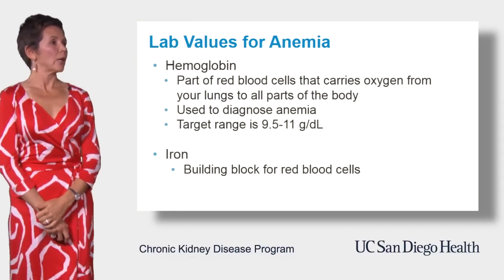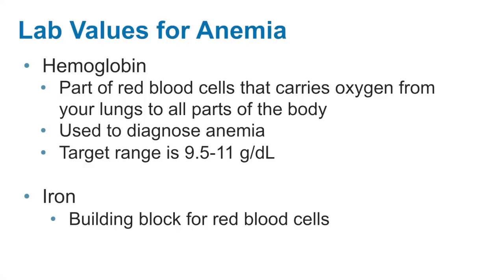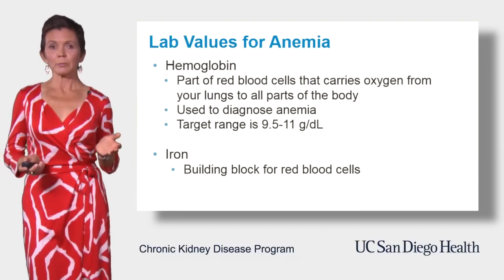We are moving on now to laboratory values for anemia. Hemoglobin is part of red blood cells that carries oxygen from your lungs to all parts of the body. Hemoglobin is used to diagnose anemia. The target range for hemoglobin in patients with CKD is somewhere between 9.5 to 11, and it's kind of a moving target.